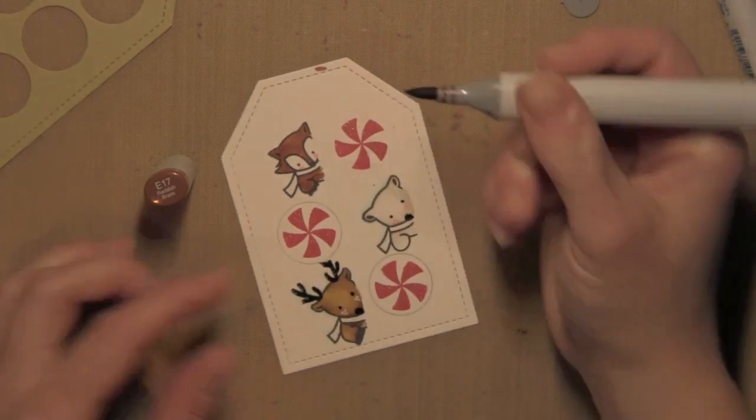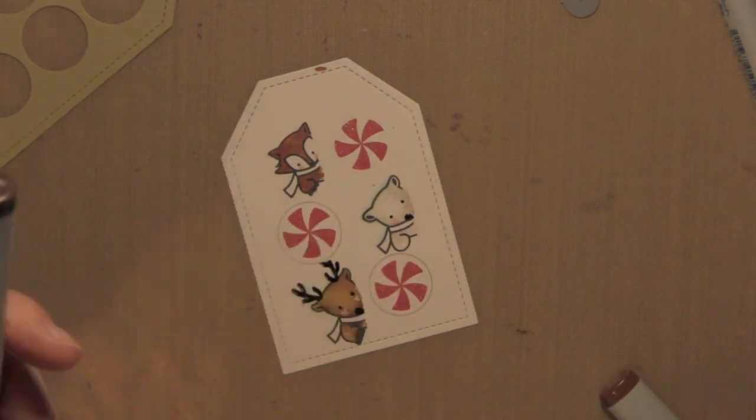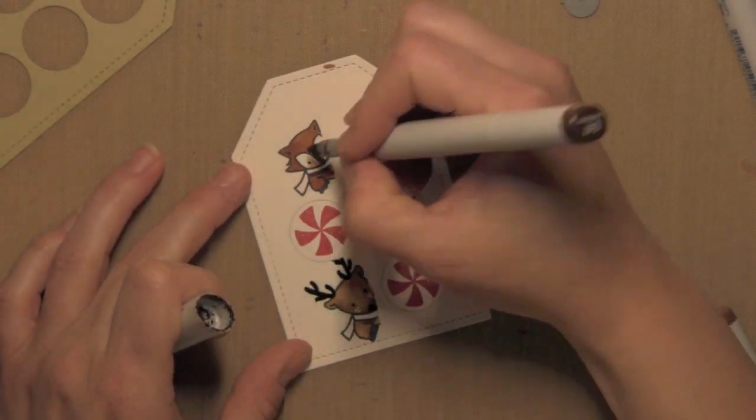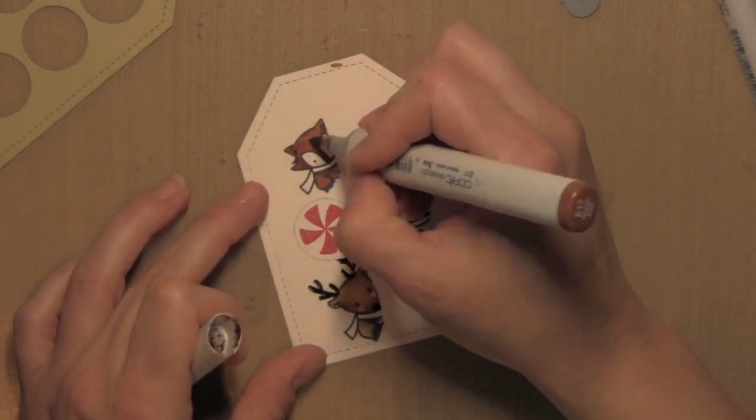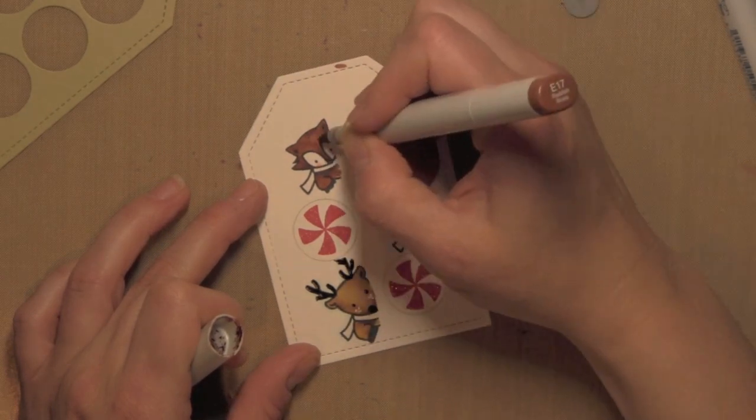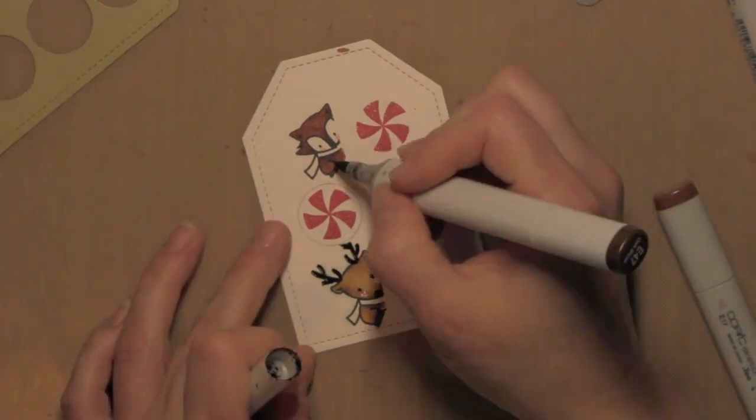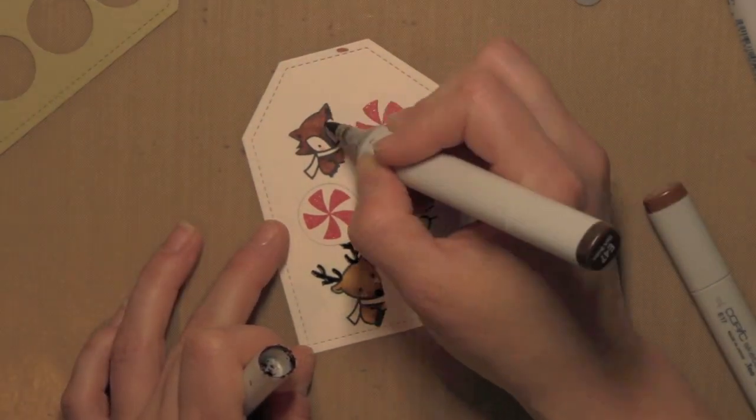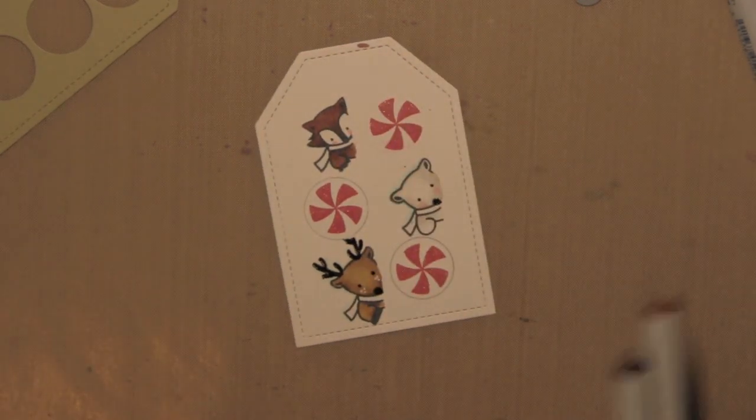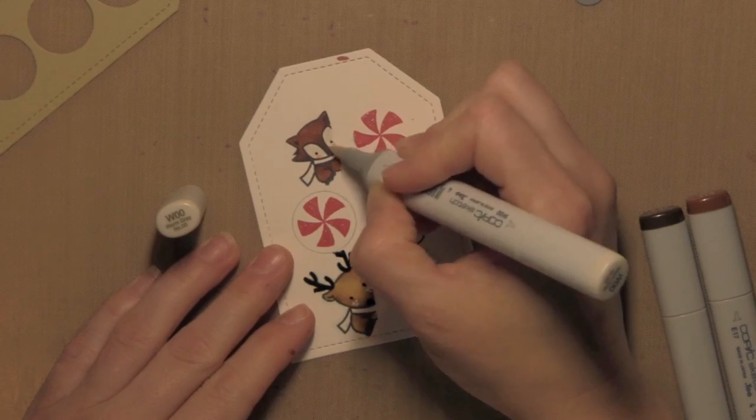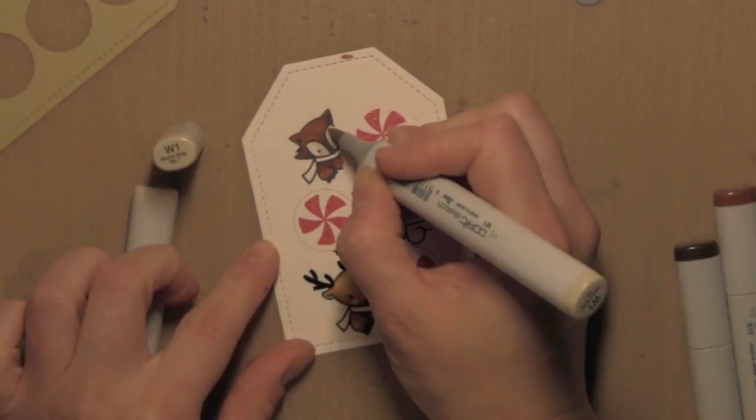The color I started out with for him I didn't exactly love so I went over it with a little bit darker and then added some more darker blending and shadowing. I love that about Copics. If you didn't quite get the color you wanted the first time, if you're going a bit darker you can always go over it and change the color.